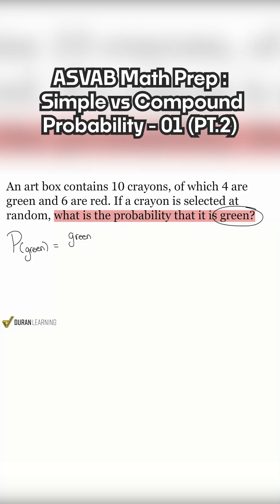So we want the probability that it is green. The probability of getting green is going to be the number of ways that we can get a green crayon divided by all crayons. So let's go ahead and do some straightforward arithmetic. When we read, it says an art box contains 10 crayons, of which 4 are green and 6 are red.